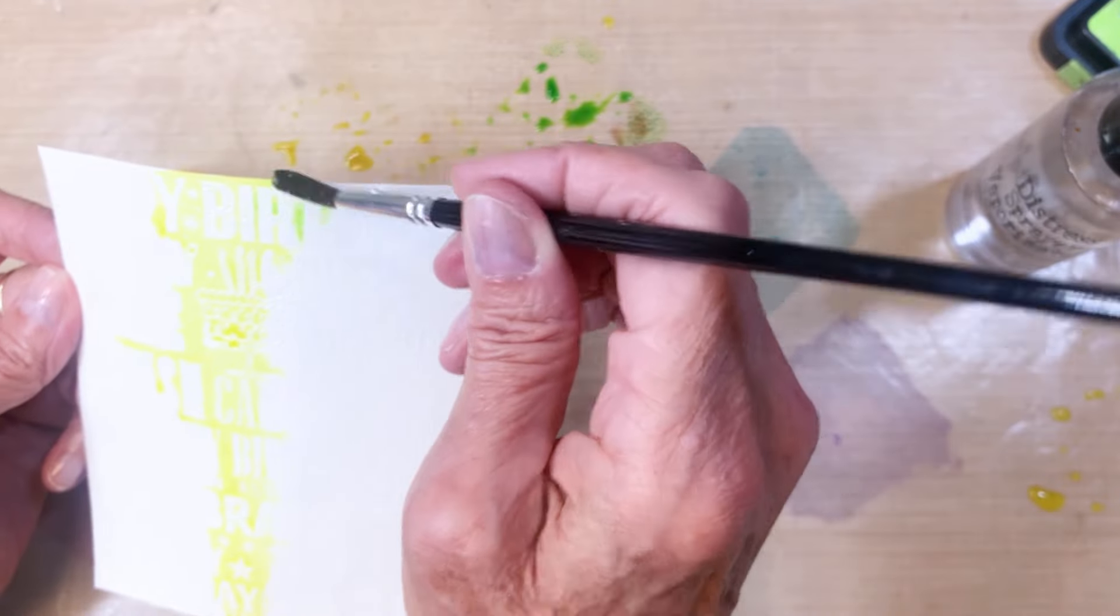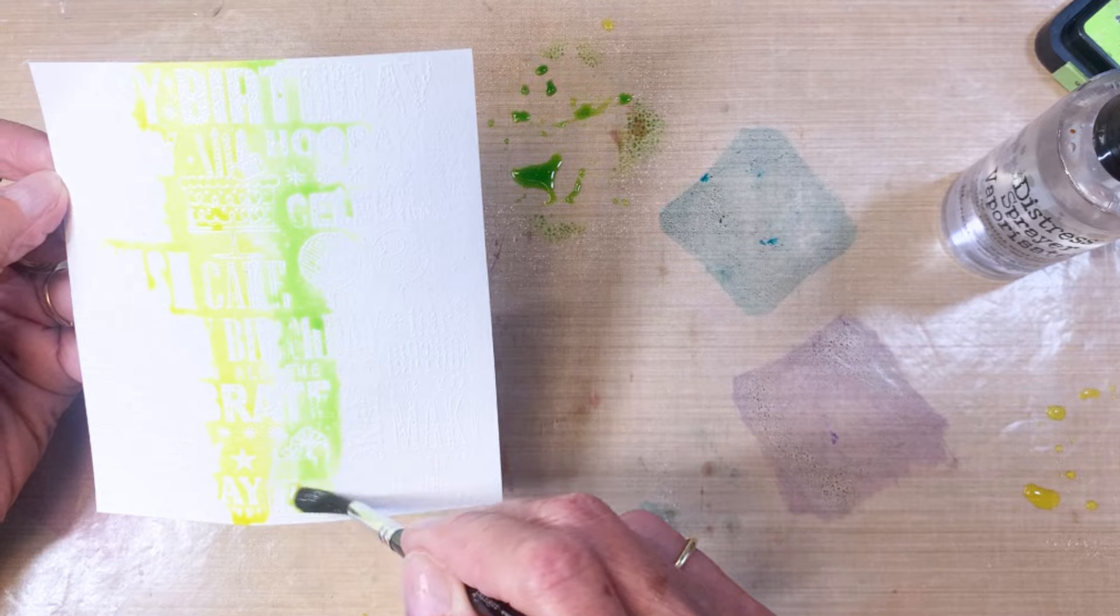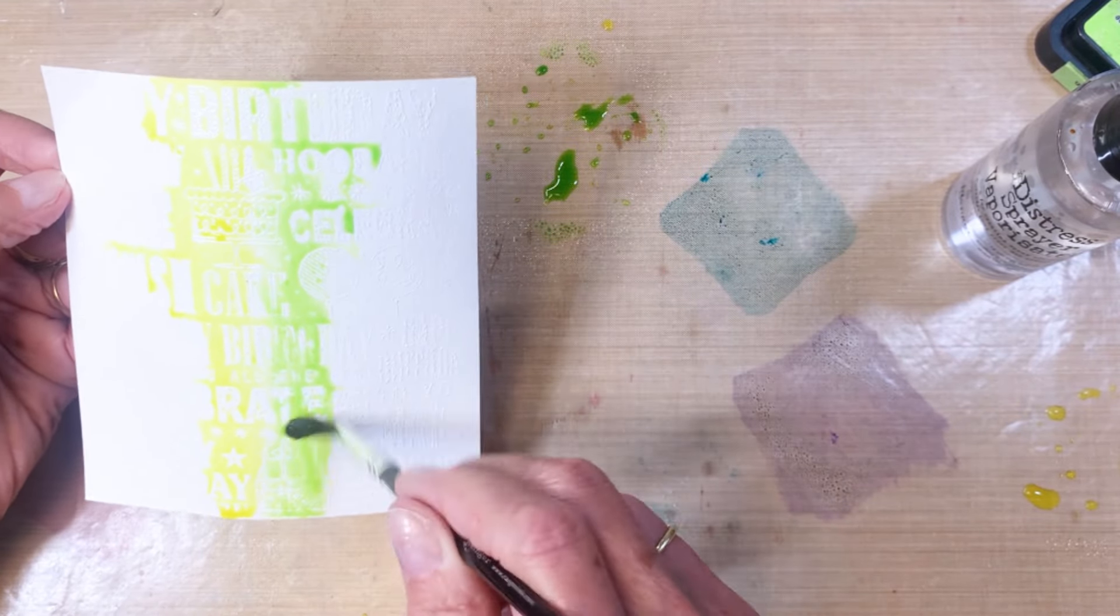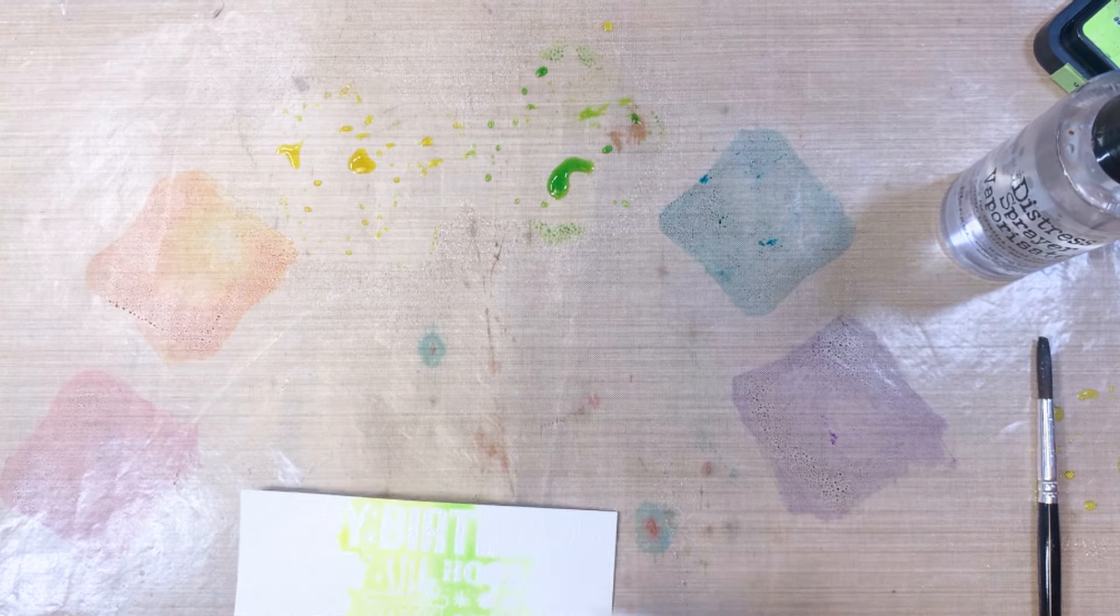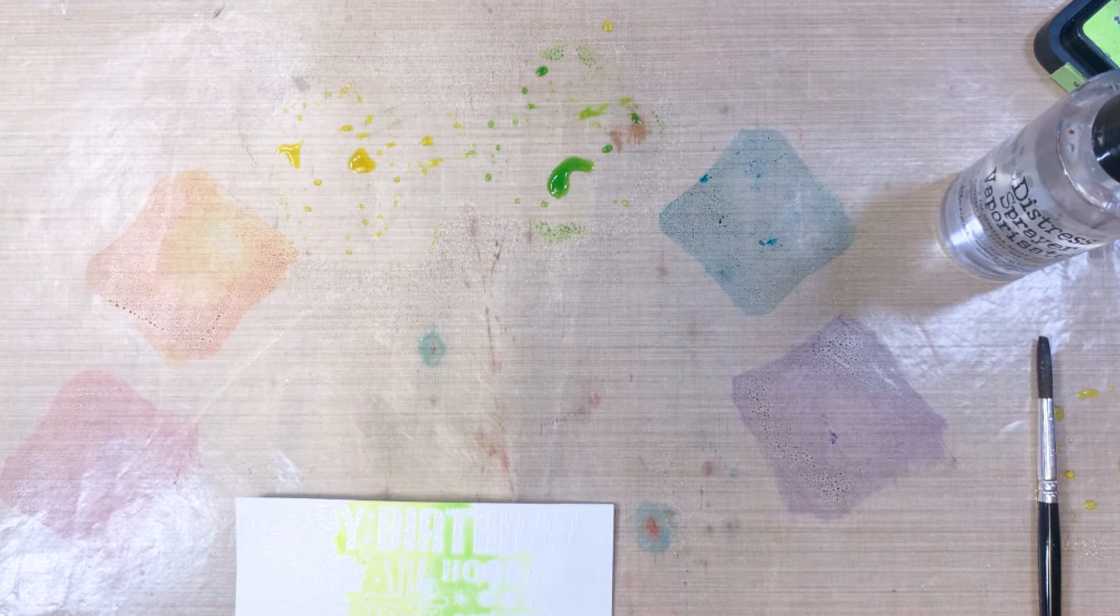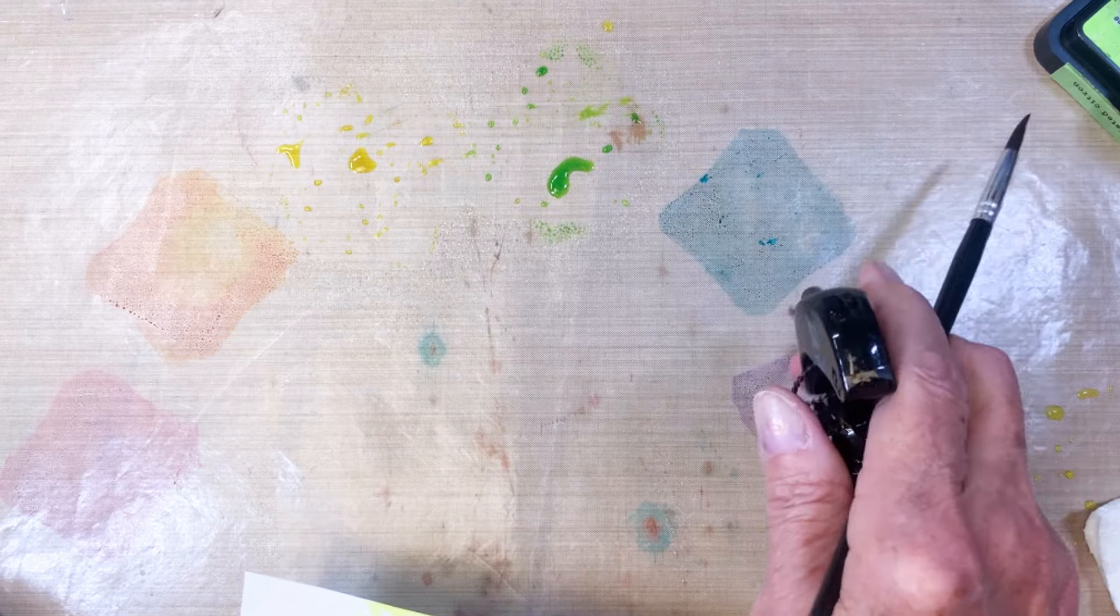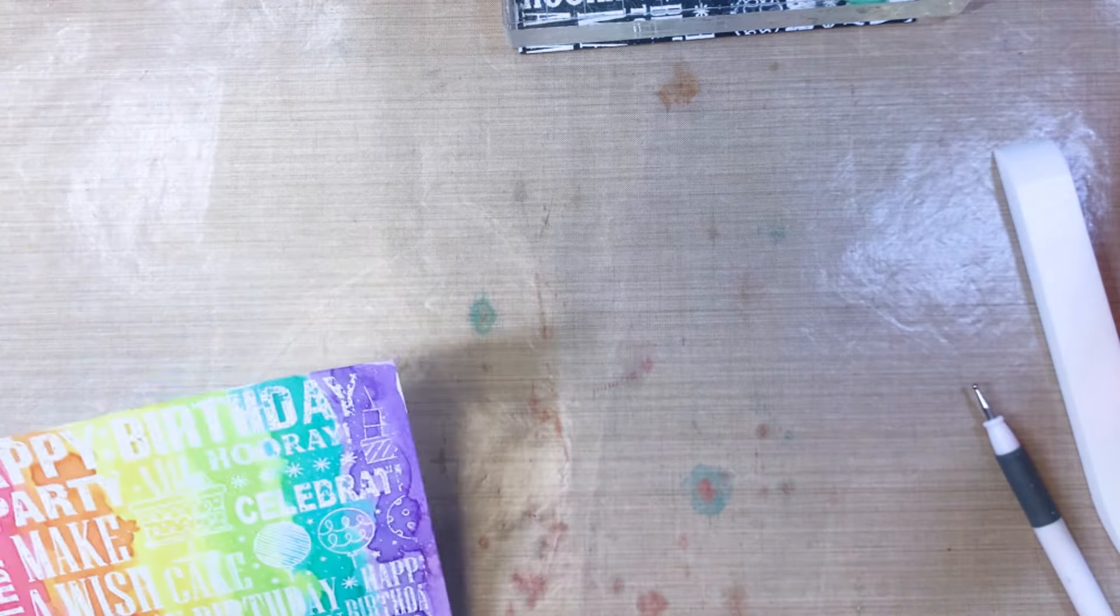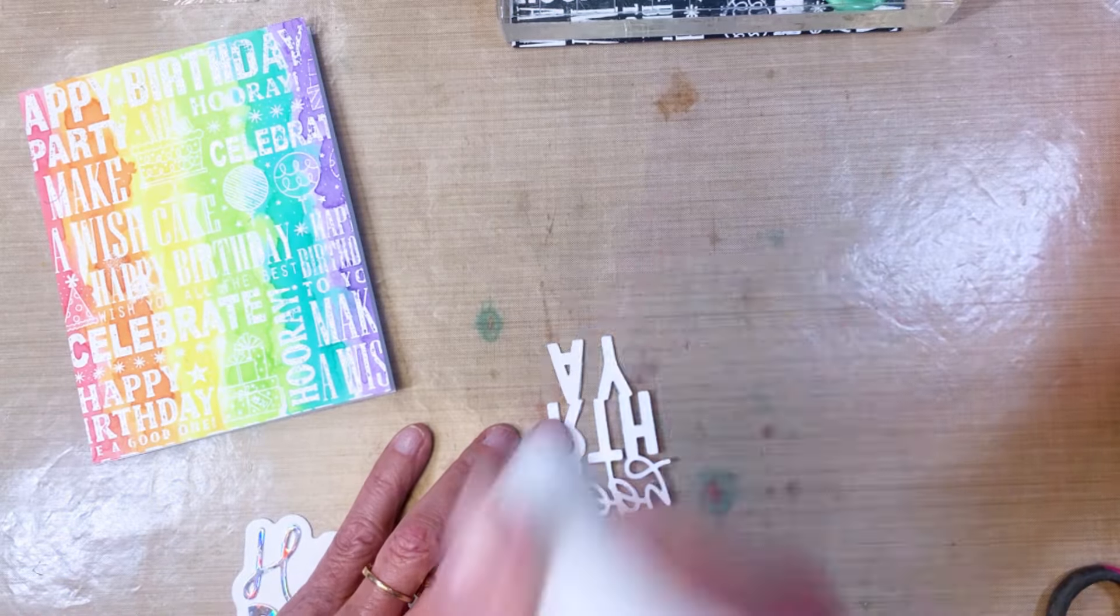Here I am working with the watercolor background. I've got a rainbow of colors laid out on my craft mat and I'm adding the color in vertical stripes using a larger brush. The colors here are wilted violet, twisted citron, peacock feathers, mustard seed, picked raspberry, and carved pumpkins. Look at how bright that is. I was really happy with that.